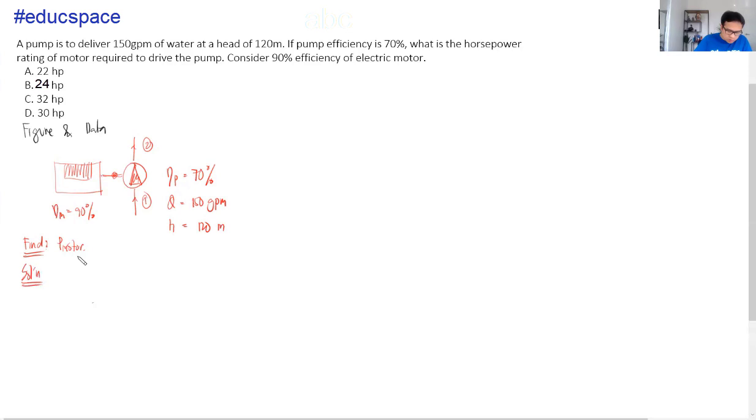So, solution. Take note, mag-select tayo ng motor by simply first getting yung ating water power because yung work na ginagawa ng pump over the efficiency ng pump and then over ng efficiency ng electrical motor. So, mangyayari dito is PW which is basically the output. And then take note, yung efficiency is P output over the P input.